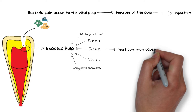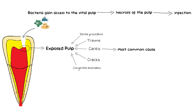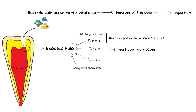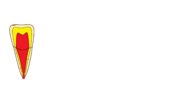Caries itself is the single most common cause of pulpal exposure. Other scenarios discussed are more or less classified as direct mechanical routes or mechanical exposures, like during any restorative procedure or as a result of trauma. Because of these direct exposures, the bacteria present in the oral cavity will gain immediate and direct access to the pulp. These types of pulpal exposures may look alike but there are some major differences between them.